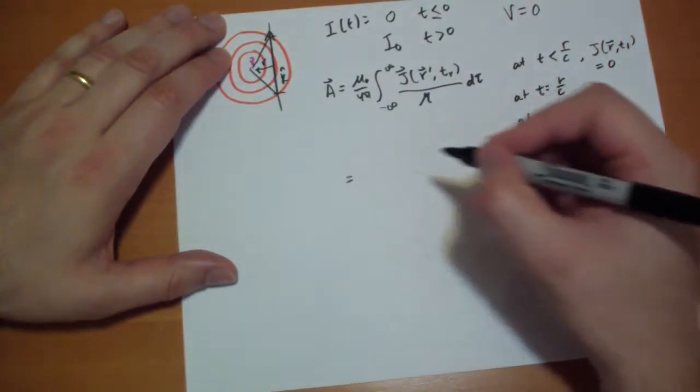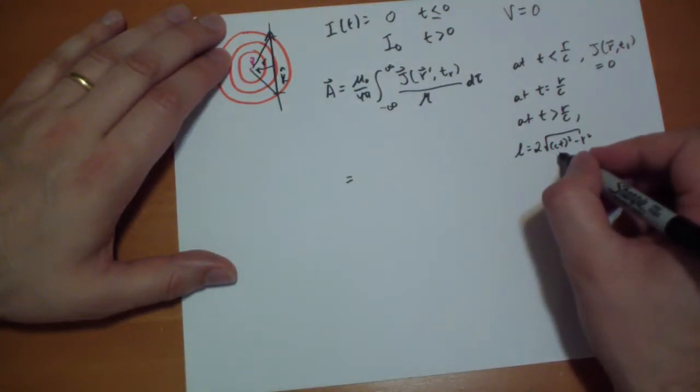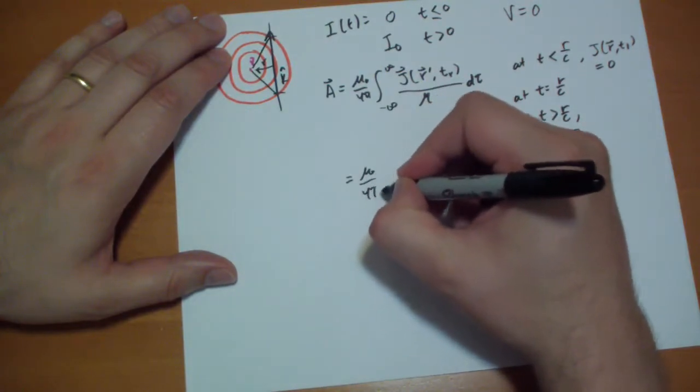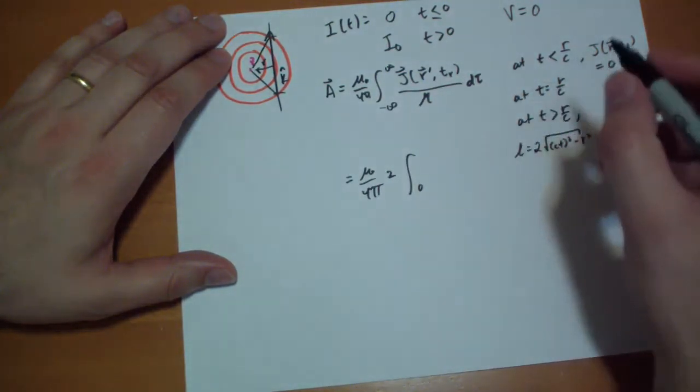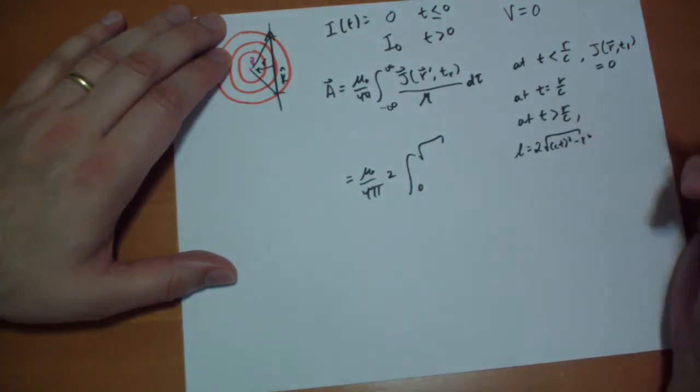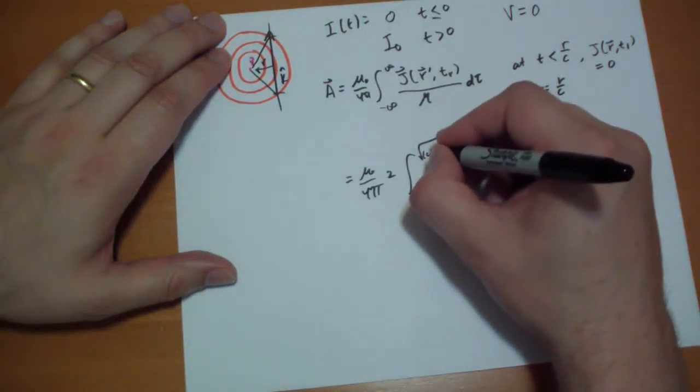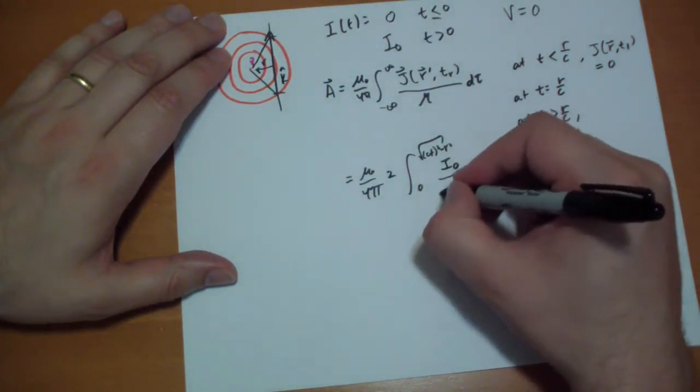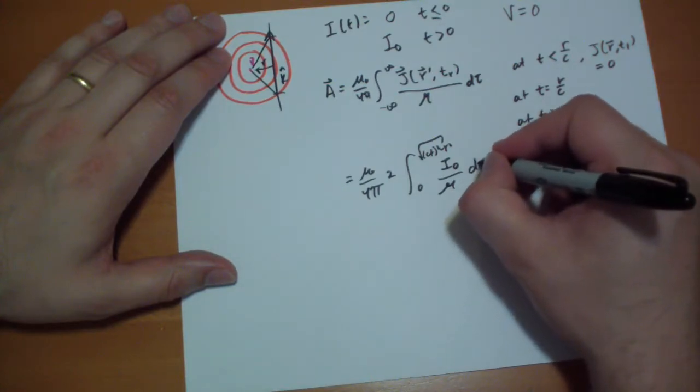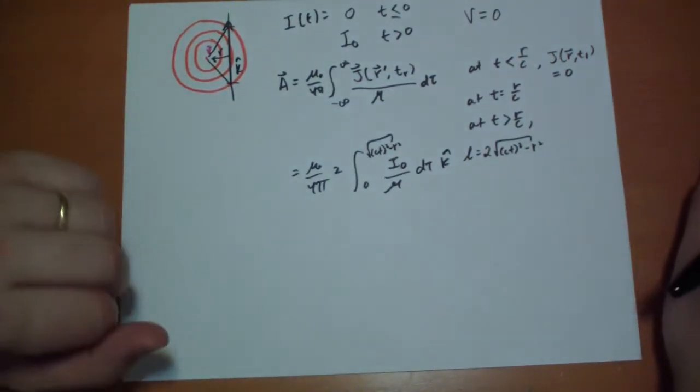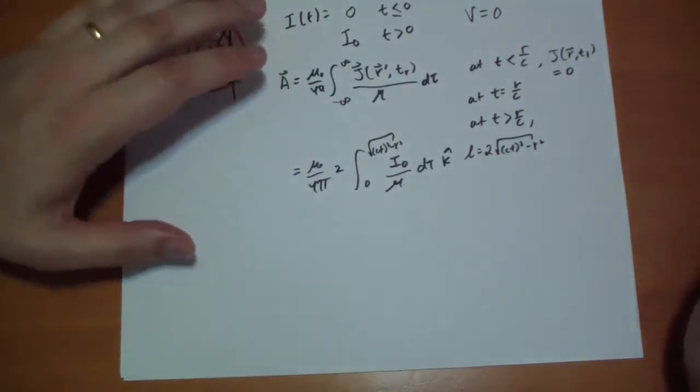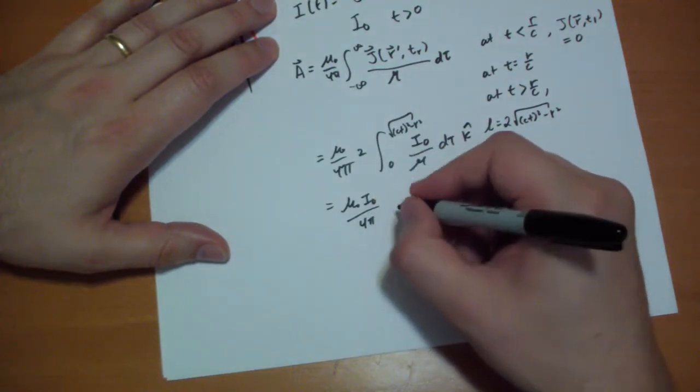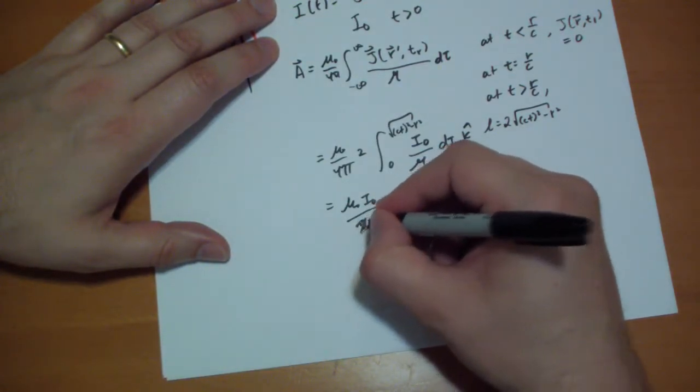So we really only have to evaluate the integral between those two points. Or rather, take from zero to that point and evaluate the integral and double it. So we have 2 times the integral from zero to the square root of ct squared minus r squared, times the current, which is i-naught, over r. It's a vector, so it goes in the k-hat direction. And i-naught's constant, you can pull that out. So you get mu-naught i-naught over 4 pi, oh, 2 pi, because we have the 2 and the 4.